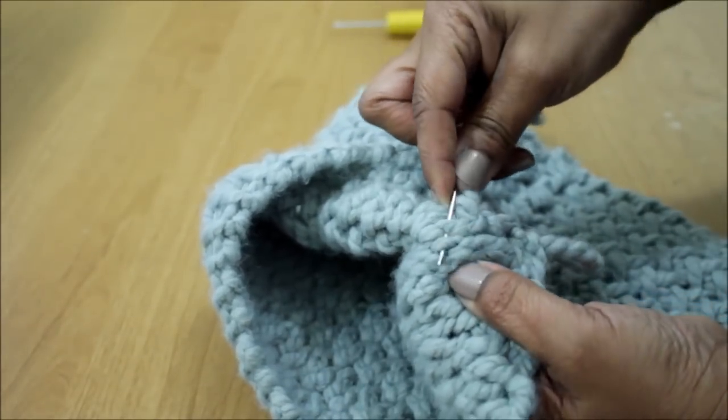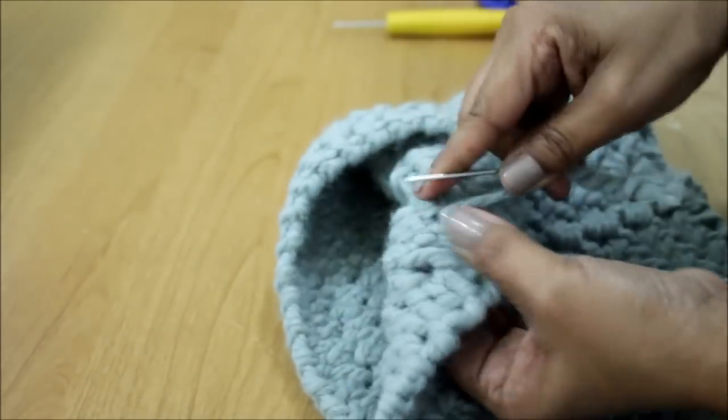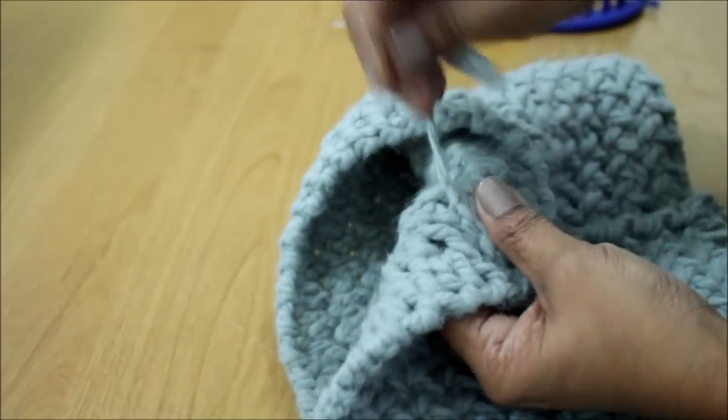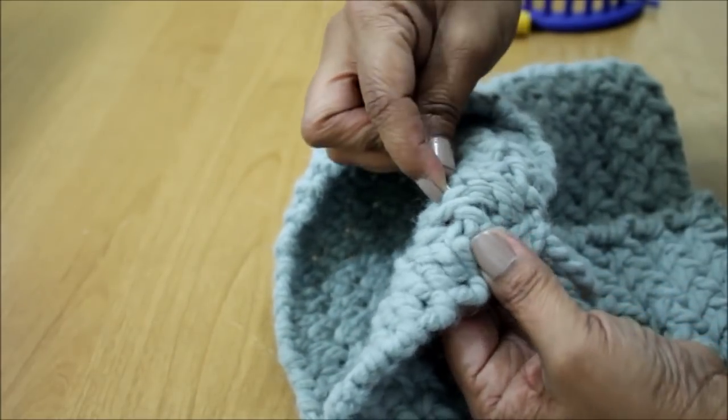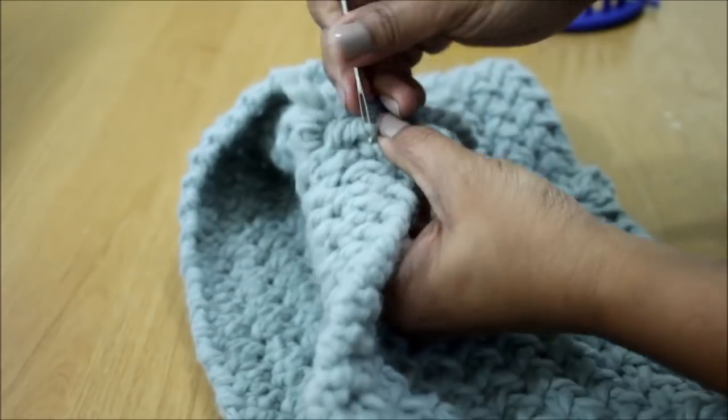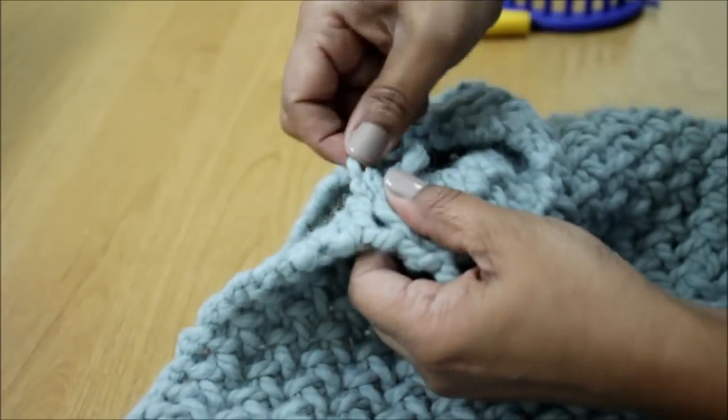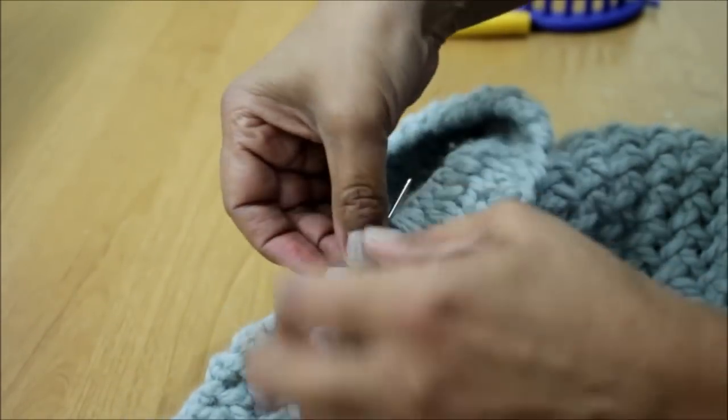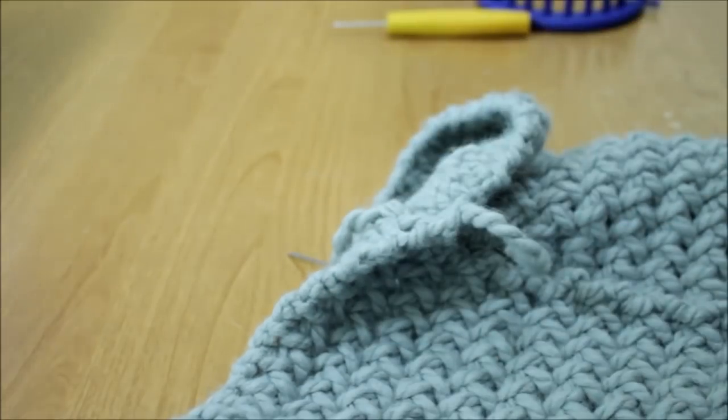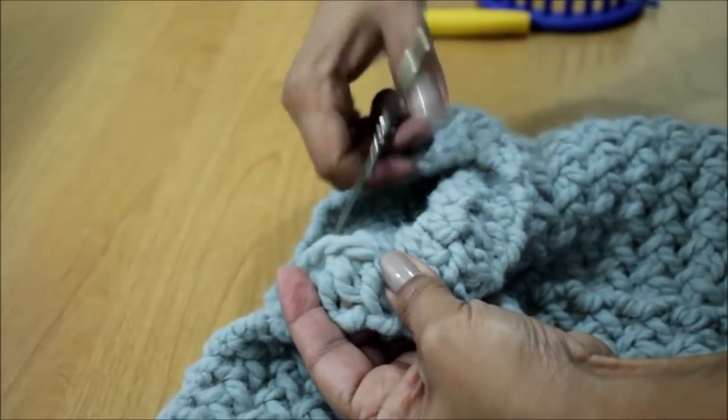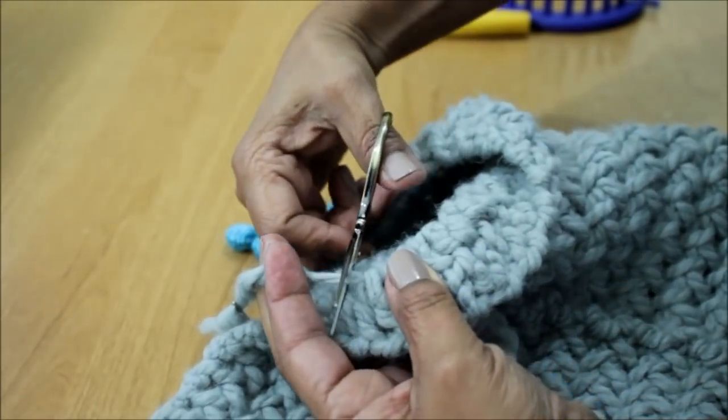And once I feel like I've gone up enough, then I turn around and I come in the opposite direction. I feel like it secures my yarn better. And once I feel like I've done enough on that end, then I get my scissors and pull on it a little bit and cut the excess yarn.